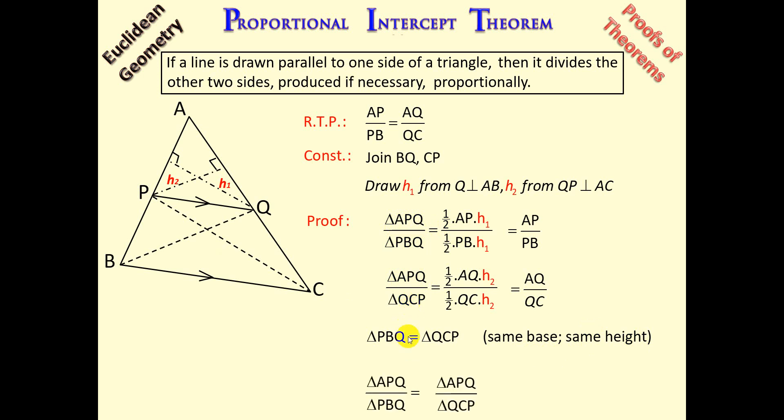Therefore, we can conclude that the area of triangle APQ over the area of triangle PBQ is now equal to the area of triangle APQ over triangle QCP. Because the tops are common triangles, and the bottoms are equal—same base and same height.